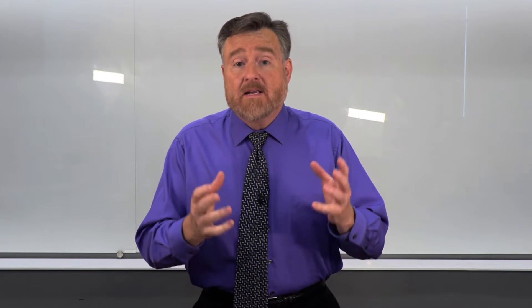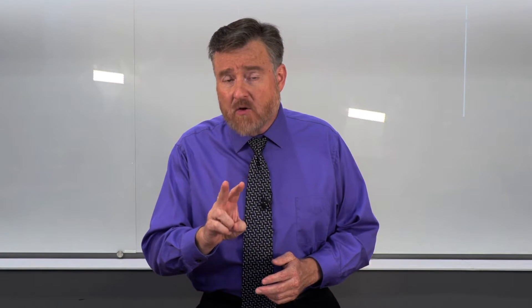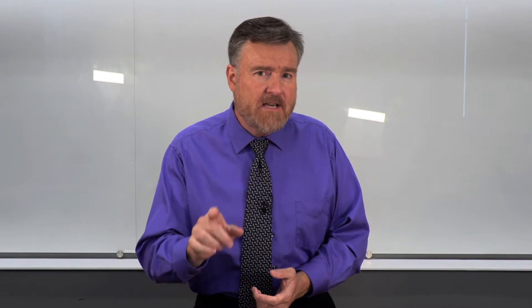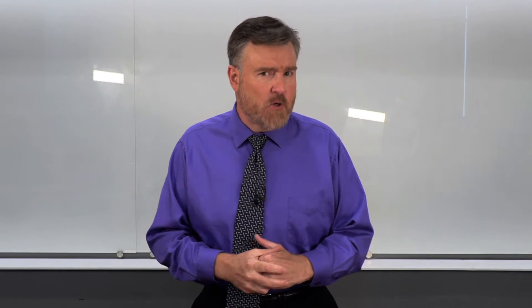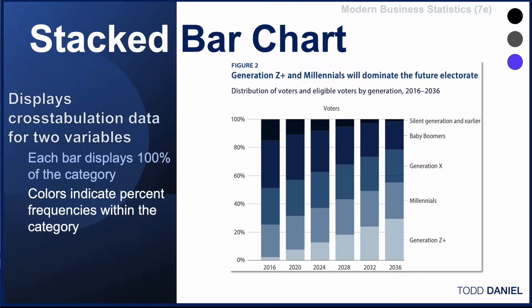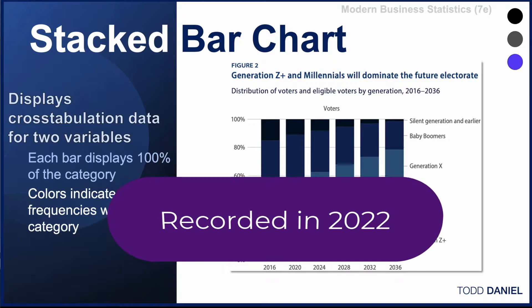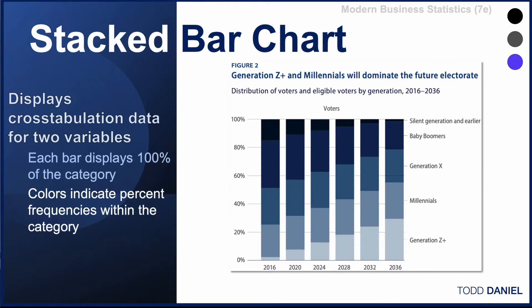But there's more than one type of bar chart, and I'm going to teach you about two other ones that could be very useful in specific situations. Let's look at this particular bar chart and see what is different about it versus the ones I've shown you before. This bar chart is examining the distribution of voters and eligible voters by generation in the presidential elections from 2016 through 2036. This video has been recorded in 2020, so obviously these are projections of how the distributions will be in future years.